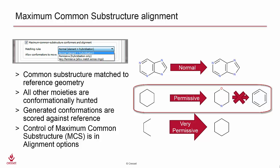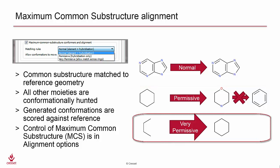For example, cyclohexane would match morpholine, but not benzene. With very permissive, ring atoms can match non-ring atoms. For example, butane can match part of cyclohexane.